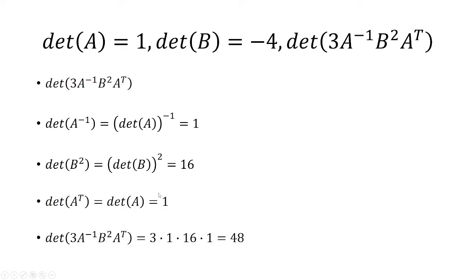Bringing it all together, we're going to multiply 3 with the determinant of A inverse, which was 1, and the determinant of B squared was 16. The determinant of A transpose is 1. Multiplying all these four numbers, we end up with 48 as our final answer.